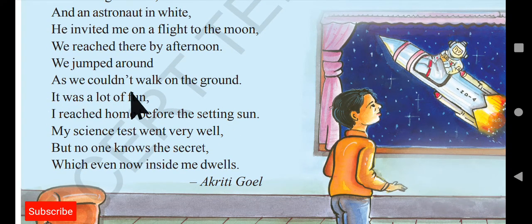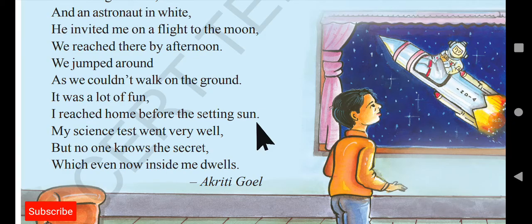'We jumped around as we couldn't walk on the ground, it was a lot of fun, I reached home before the setting sun.' On the moon you cannot walk normally because the gravity is low, so your weight is very less there — you're just like a balloon, hopping around like a kangaroo. They both jumped around the moon, enjoyed very well, and finally the boy came back home before sunset.